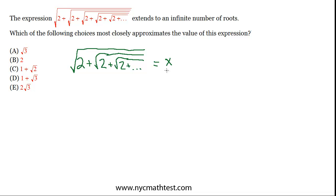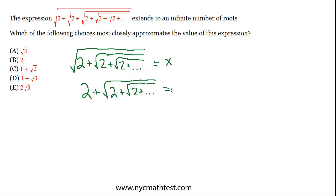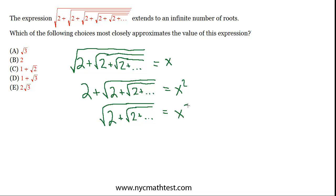Even though we already have x by itself, let's do a little algebraic manipulation. The left side is a square root, so we can square both sides. The left side would then become 2 plus square root of 2 plus square root of 2 plus dot dot dot, and the right side would become x squared. Then if we subtract 2, the left side becomes square root of 2 plus square root of 2 plus dot dot dot equals x squared minus 2.